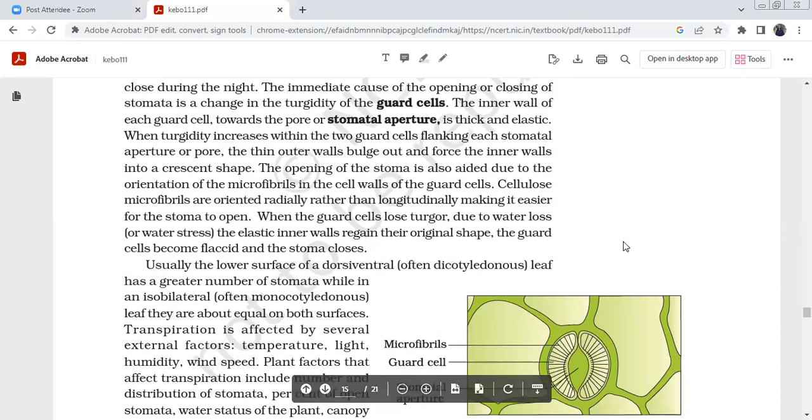When the guard cells lose turgidity due to water loss, the characteristic inner wall regains their original shape. With flaccid guard cells, the stoma closes.